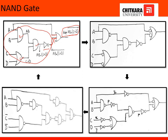To convert it into NAND logic, first we place bubbles at the output of each AND gate so that they are converted into NAND gates. Then we place bubbles at the inputs of each OR gate so they become bubbled OR gates, which are equivalent to NAND gates only.